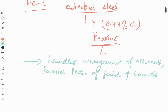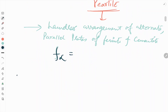Now we want to know the relative amount of ferrite and cementite in pearlite, which can be determined using the lever rule. I already made a video about what the lever rule is — you can go through that video also. First we will see what is the percentage of ferrite. The eutectoid steel forms with the composition ranges of 0.02 and 0.77 percent carbon.